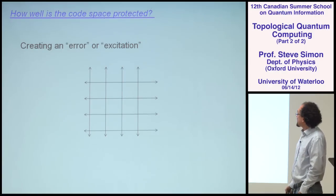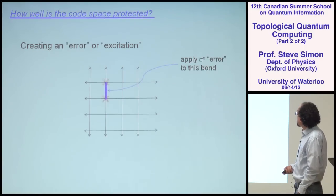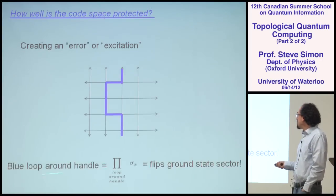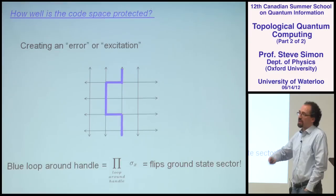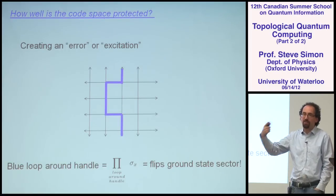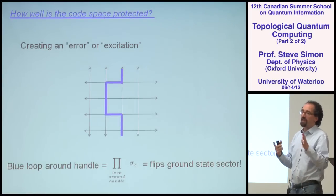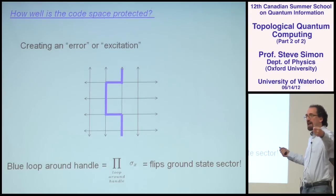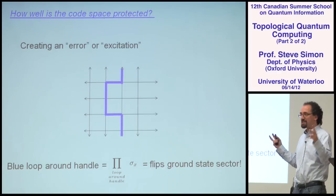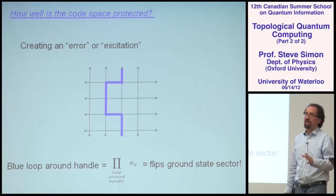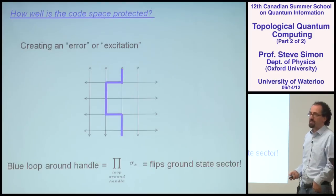How well is this code space protected? If I make some errors and keep moving this vertex error all the way around the handle of the torus, I've created a set of spin flips all the way around the torus. I've changed the parity of the number of strings running around a handle, and therefore had a real logical error in my code. The way you combat this in practice is you just make sure the handle of your torus is really big, so the Hamming distance — the number of errors you can sustain before a real logical error — is very large.